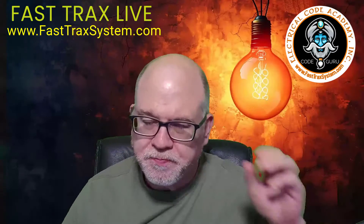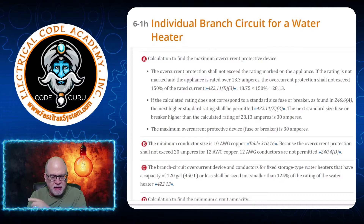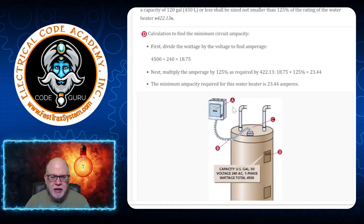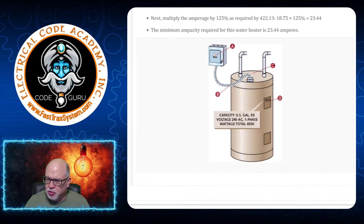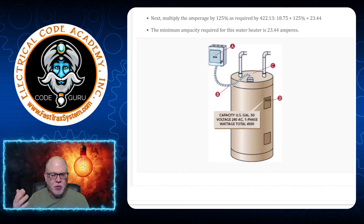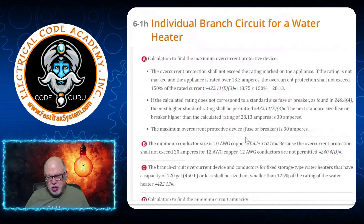So let's go to the lesson. In our Fast Tracks program, this is what you'll learn in Unit 6, section 1H. We're talking about an individual branch circuit for a water heater. Here's our water heater, there's our disconnect — we'll assume the water heater is not within sight of the panel. This is a 50-gallon, 240-volt AC single-phase unit with a total wattage of 4,500 watts — very typical for a water heater today.